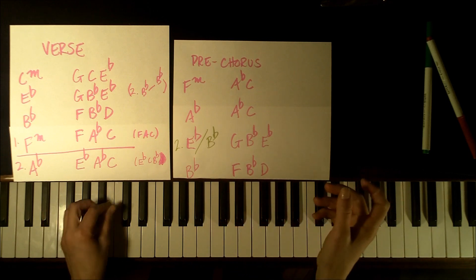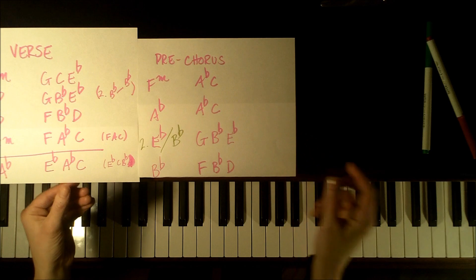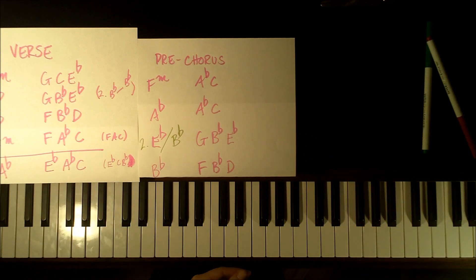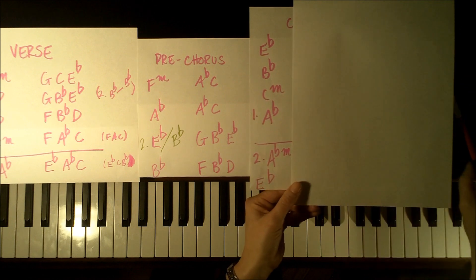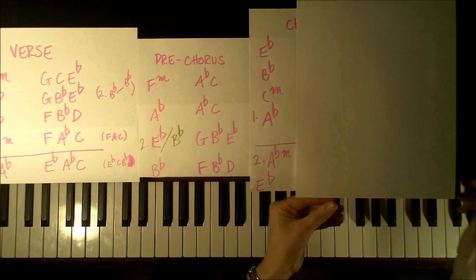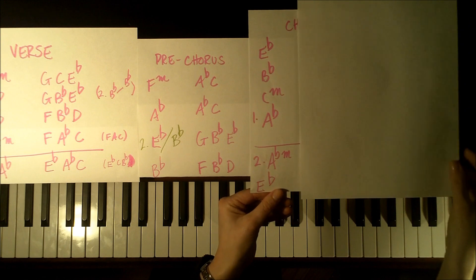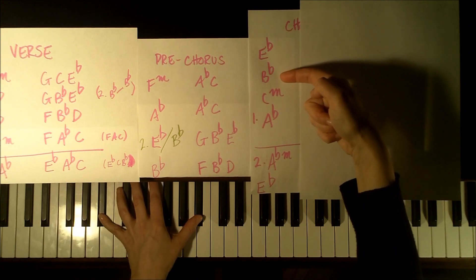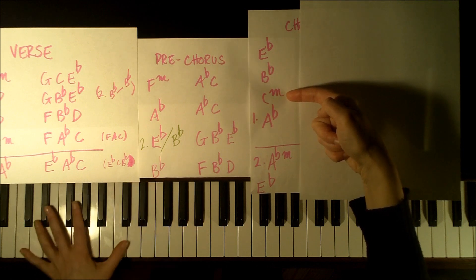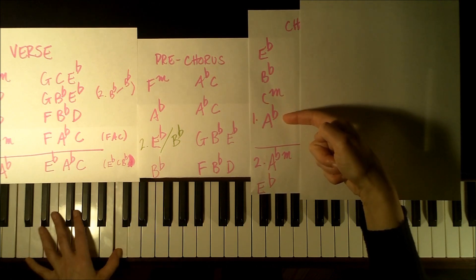So this transitions now into Bb with Bb, F, D. So from pre-chorus, the next thing that happens is obviously going to be the chorus. And the chorus uses this chord progression. So with the left hand, Eb, Bb, Cm, Ab.